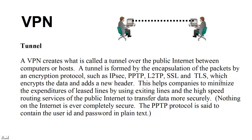A VPN creates what is called a tunnel over a public network between two computers and a host. A tunnel is formed by the encapsulation of packets by an encryption protocol such as IPSec, PPTP, L2TP, SSL, and TLS, which encrypts the data and adds a new header.